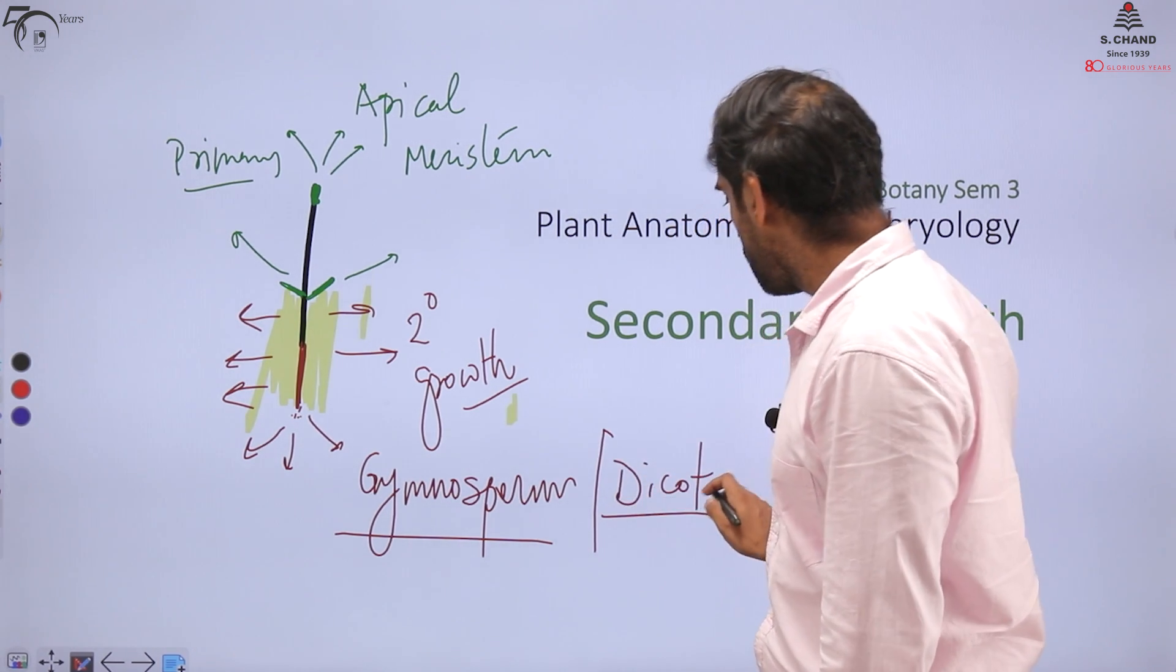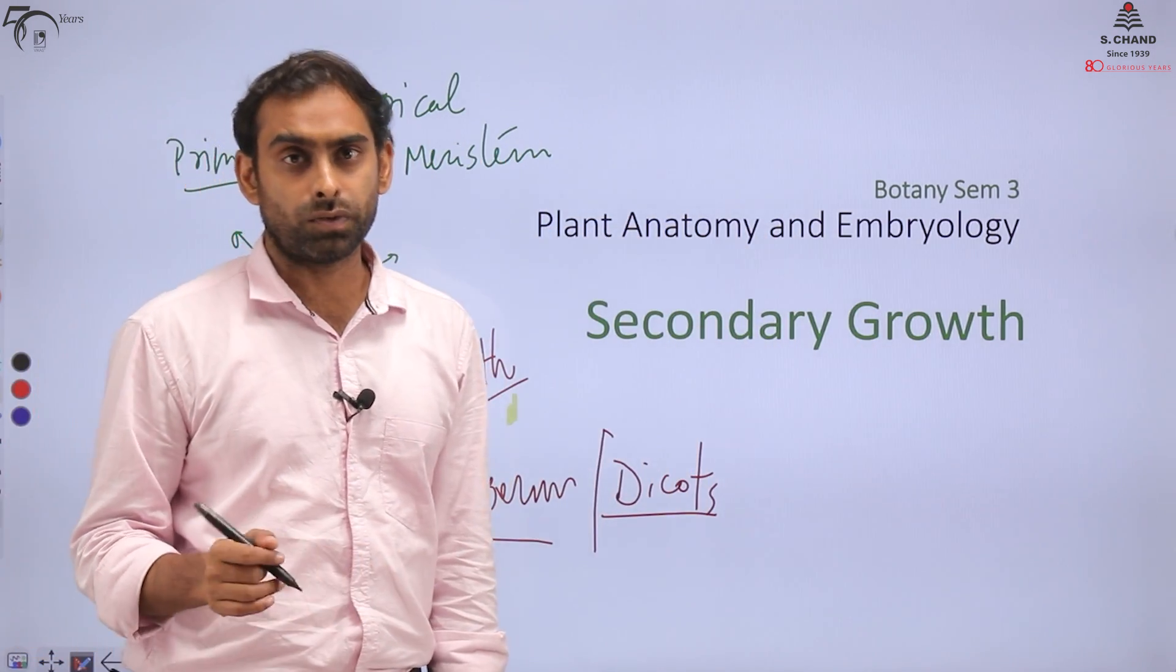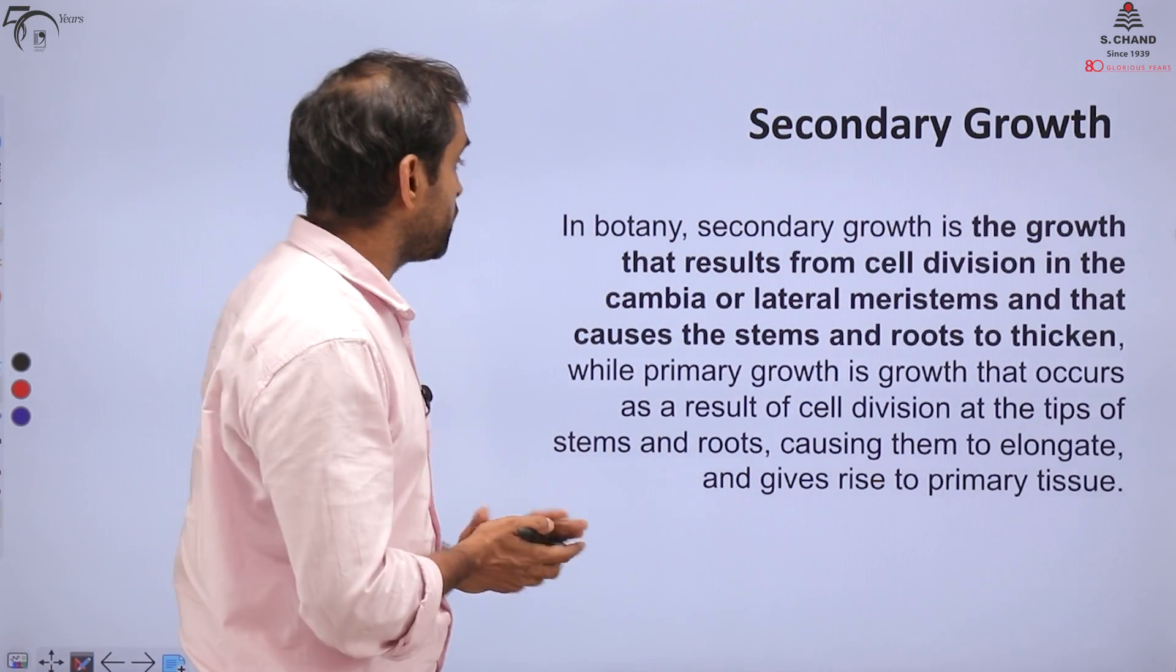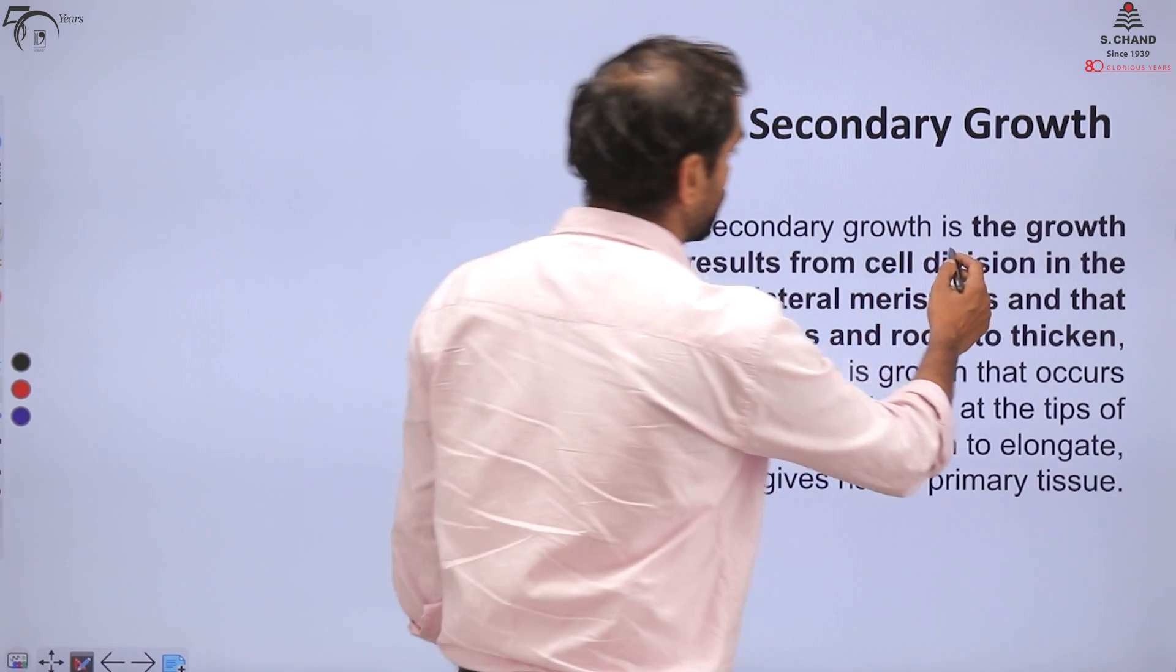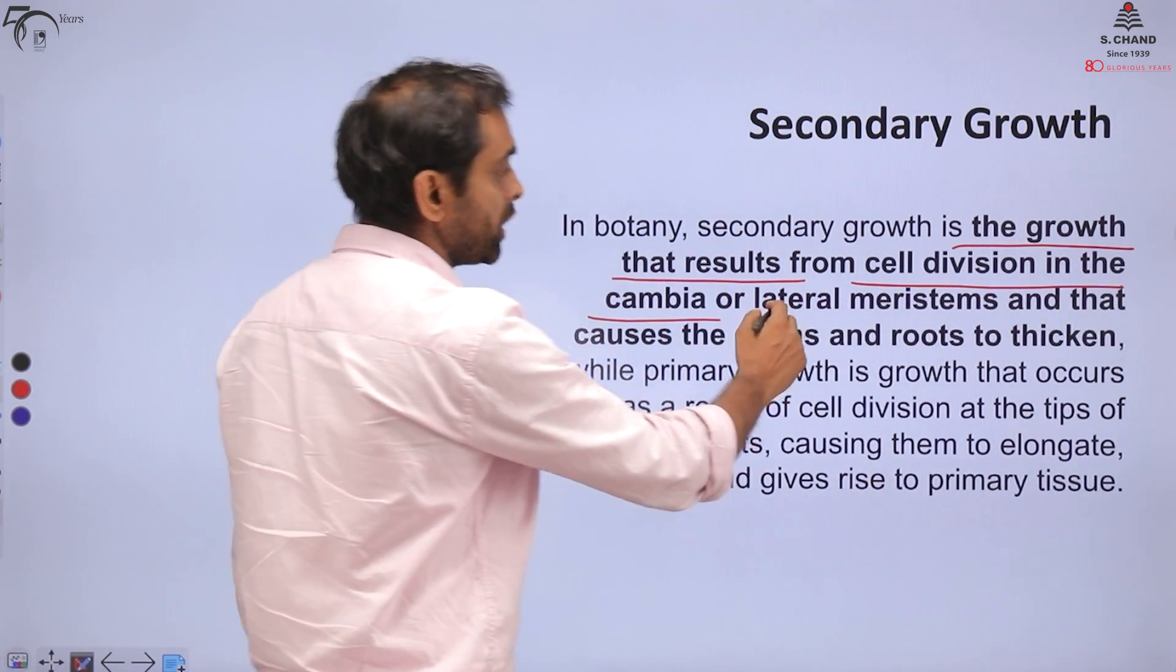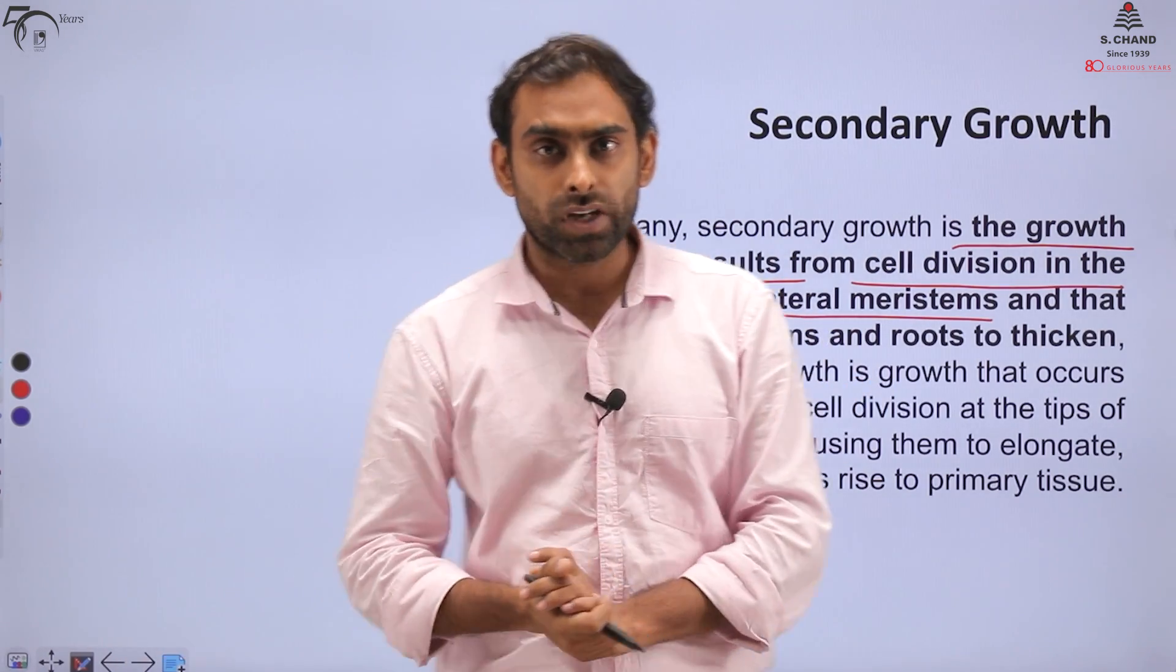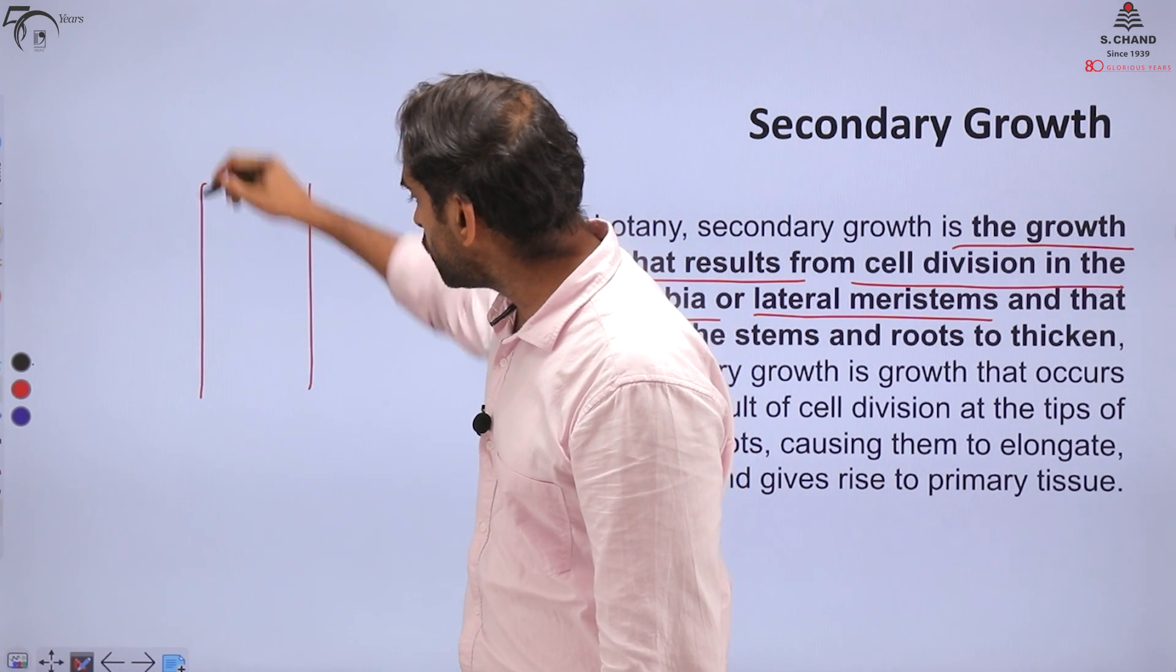Moving ahead with the standard definition of secondary growth, we will see that secondary growth is defined as the growth that results from cell division in the cambium or lateral meristem, and that causes the stem and roots to thicken.